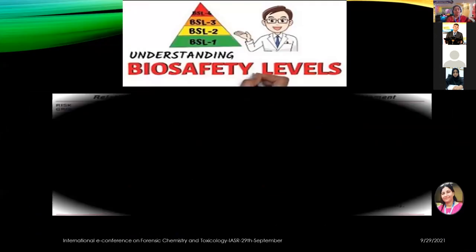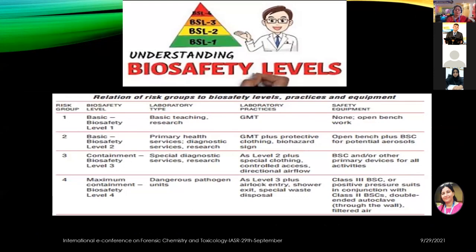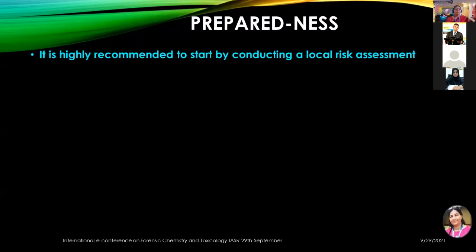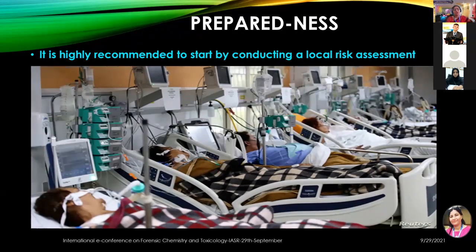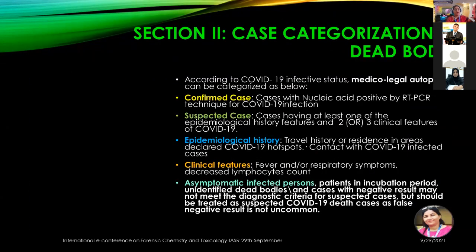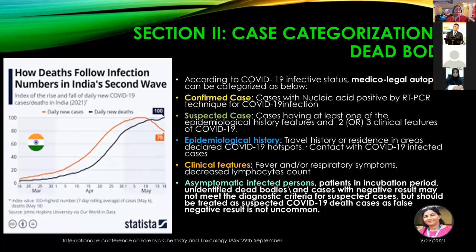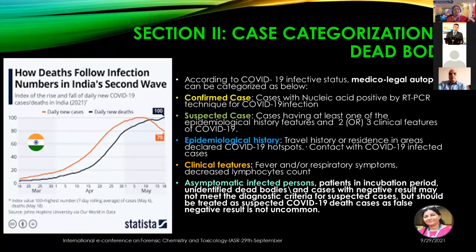Before proceeding to tests, one should understand the biosafety levels. It is highly recommended to start by conducting a local risk assessment. Section 2 categorizes medical legal cases as confirmed cases of COVID-19, suspected cases, epidemiological cases, clinical featured cases, and asymptomatic impacted cases. When diagnosed, negative results may be found for COVID-19, but they should be treated as suspected COVID-19 death cases, as false negative results are not uncommon.